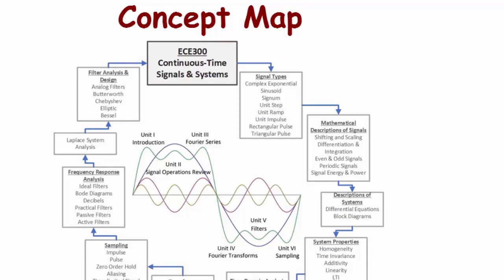First we're going to talk about signal types — some of this should be review, such as sinusoids and complex exponentials from ECE 204 and 205. Then we'll cover unit steps, unit ramps, impulse, pulse, triangular pulse, and signum. We also look at mathematical definitions of signals including shifting and scaling, differentiation and integration, even and odd signals, and signal energy and power.